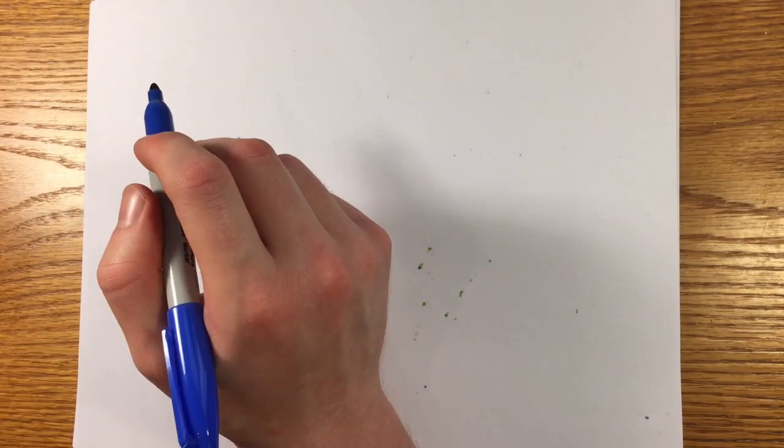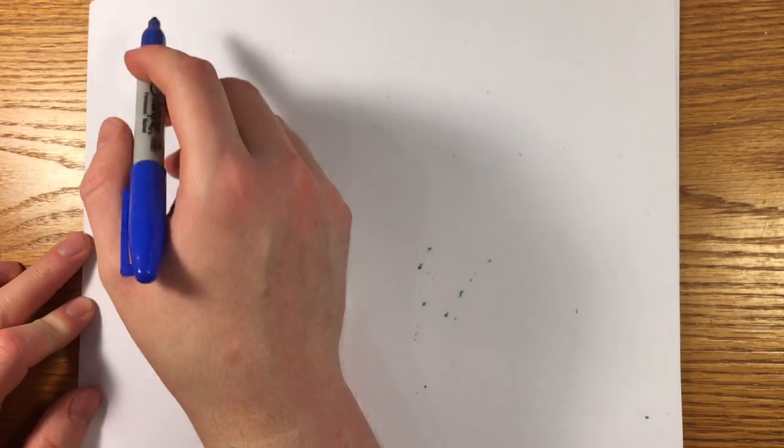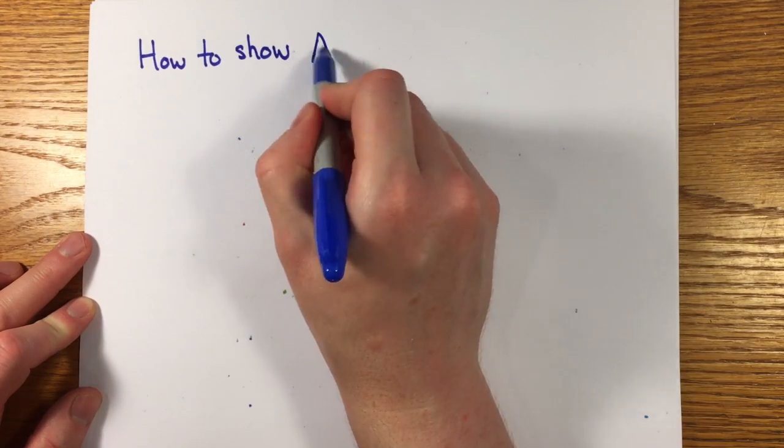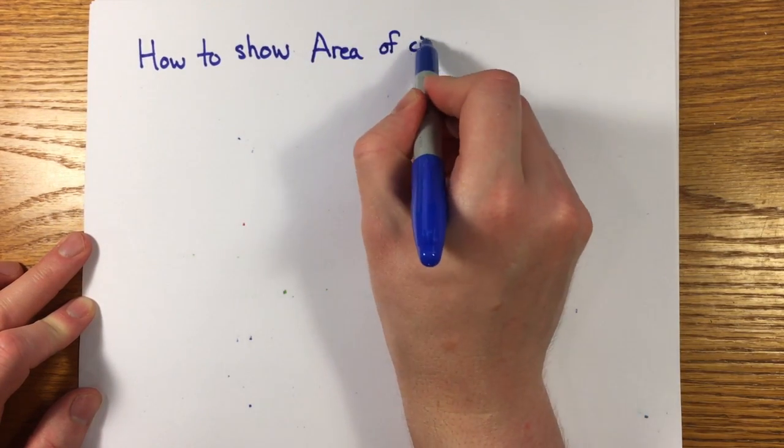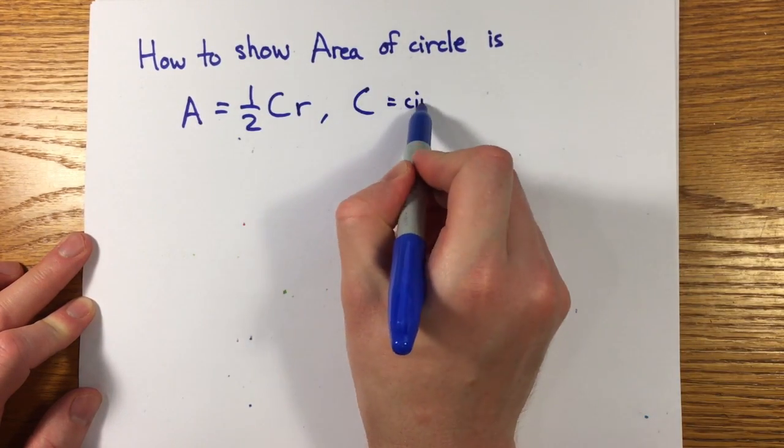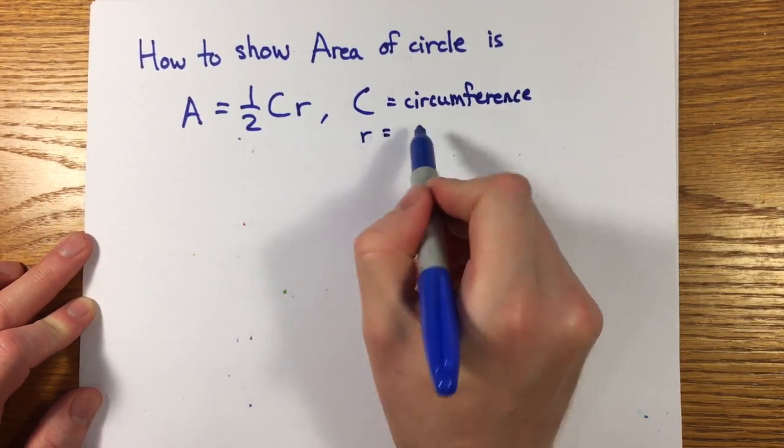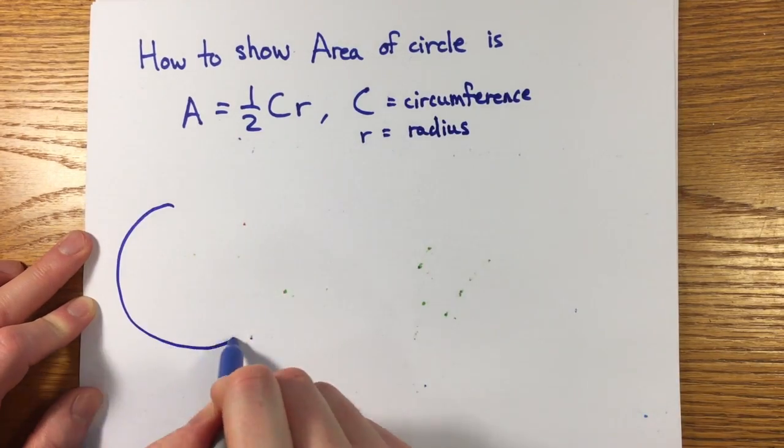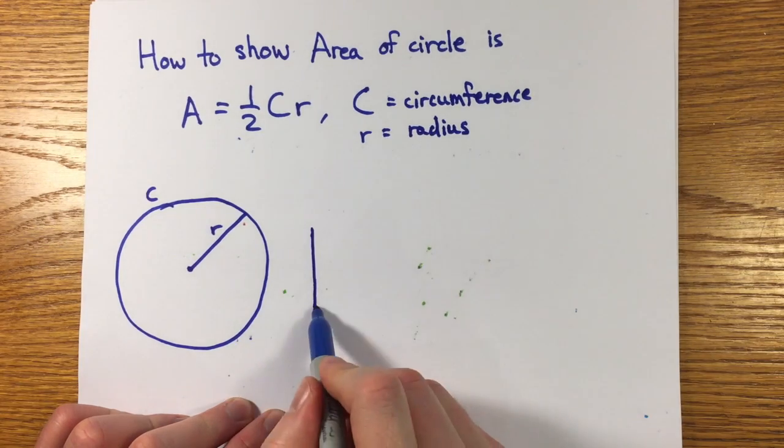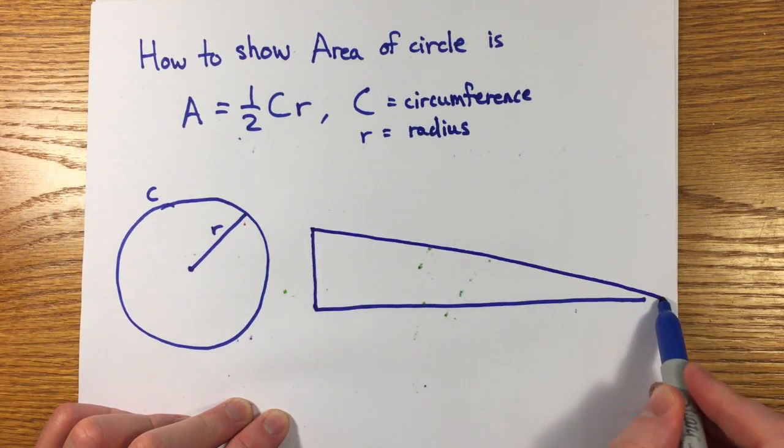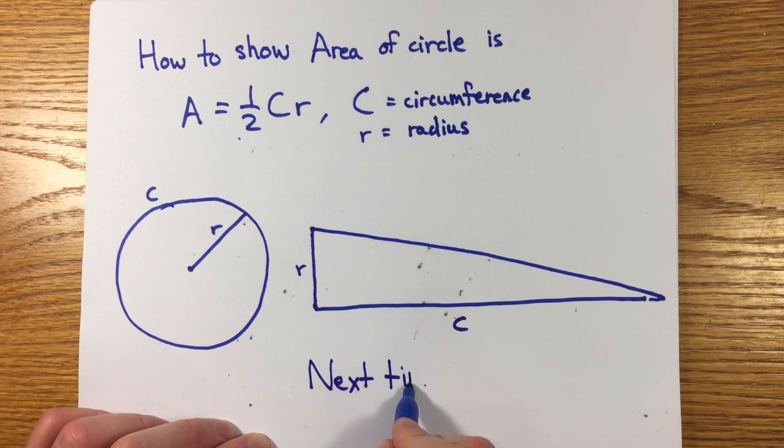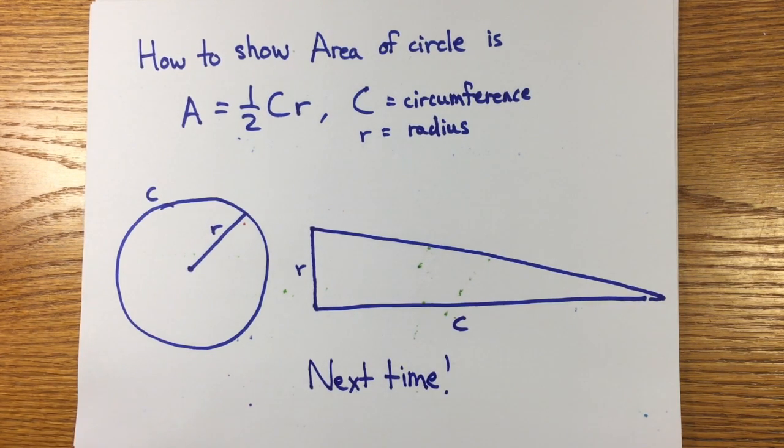Archimedes never gave a limit definition of arc length or appealed to the least upper bound property, but he did manage to show there was a quantity that represented the circumference of a circle, and he showed how this quantity was related to the area of a circle. Everyone's heard that the circumference of a circle is 2 pi r, and the area is pi r squared, but very few know a rigorous proof. I think in the next episode I'll go through his argument to give a proper proof that the area of a circle is 1 half cr.